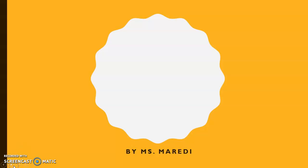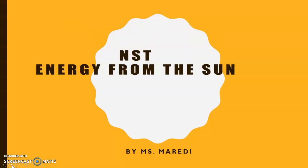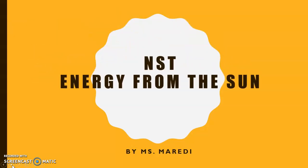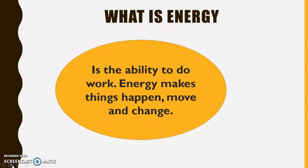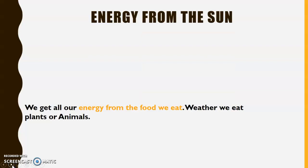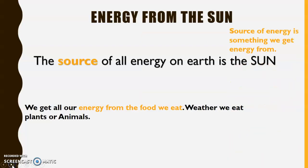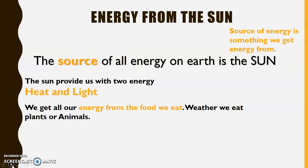Good morning, Grade 4s, and welcome to our NST lesson. Today's topic is energy from the sun. Energy is the ability to do work — energy makes things happen, move, and change. The source of all energy on Earth is the sun, which means that energy comes from the sun. The type of energy that comes from the sun is heat and light.